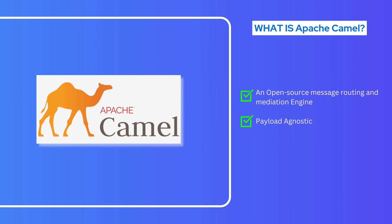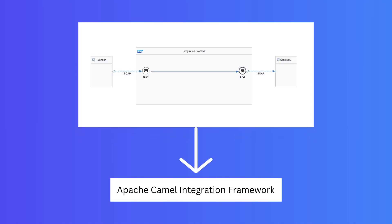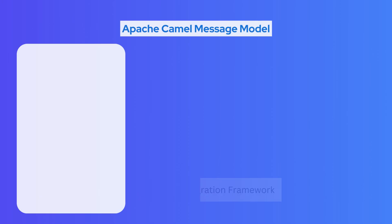Apache Camel is payload agnostic, which means you can feed the data in any format and Apache Camel can mediate this data between a sender and receiver system by using routings. Within SAP CPI, whenever you are trying to execute an integration process, in the background it uses Apache Camel's integration framework for executing the message and routing the message from source to the target.